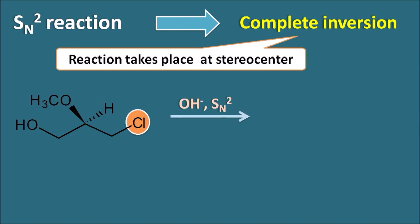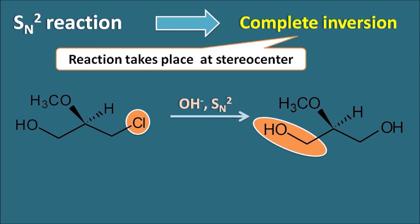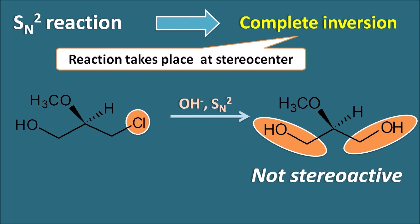When the compound undergoes the SN2 reaction in the presence of OH⁻, the chlorine group is replaced by the OH group. After this replacement, the groups attached at the stereocenter become identical — both are CH₂OH. Because of these similar groups, the product has no chiral carbon and is not stereoactive. Therefore, option A is the correct answer: the product will not have a stereocenter. These are the logical questions asked in GPAT 2017.